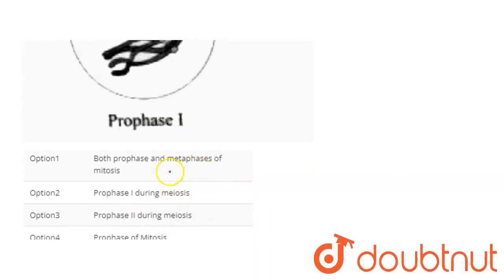we have both prophase and metaphase of mitosis. This option is not right because in metaphase, the chromosomes are aligned at the equator. After that,